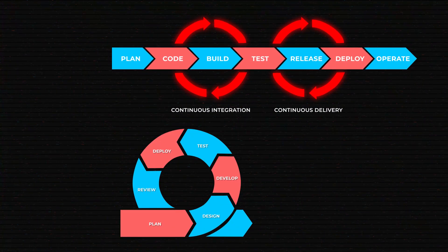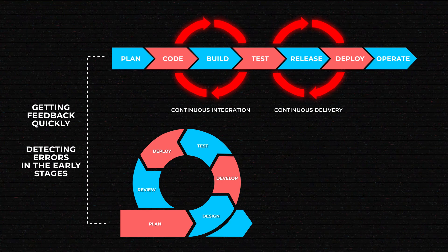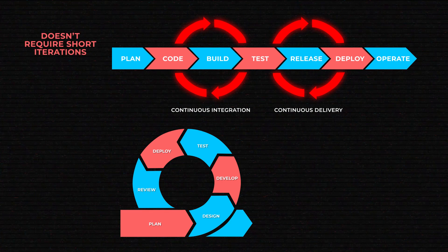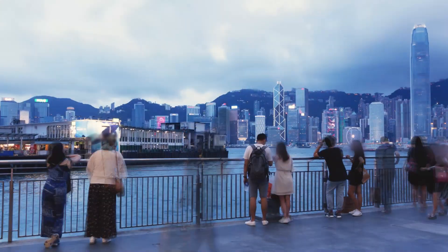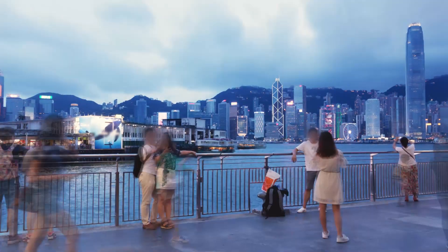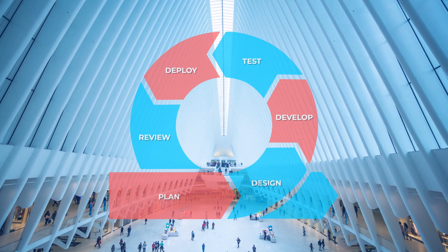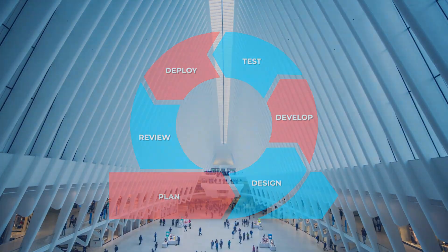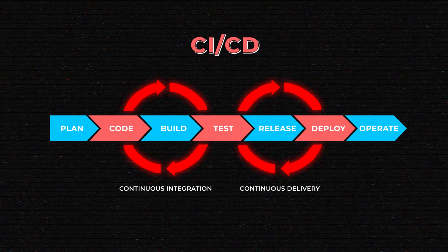In 2022, 11% of organizations were considered high DevOps performers and deployed 417 times more than low performers. This is achieved by high levels of automation and the infrastructure that connects all aspects of product delivery in a unified ecosystem. Although CI/CD facilitates Agile practices such as getting feedback quickly and detecting errors early, it doesn't require short iterations and introduces automation to the development lifecycle. CI/CD solves the problem of adapting quickly without disrupting the whole development flow, and consumers get to see new features in real time.